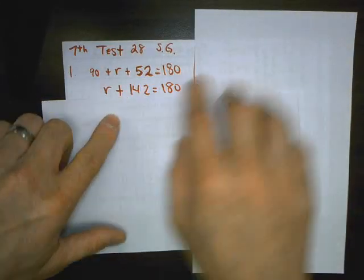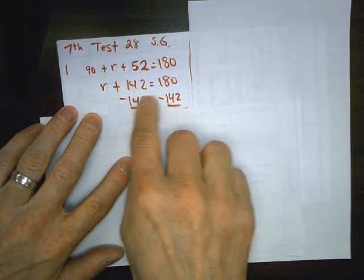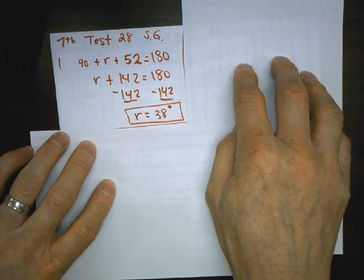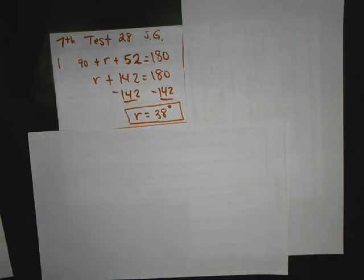So we just solve this equation, we combine like terms, and then do the inverse operation, subtract 142 to both sides, and we get 38. That's the missing angle, 38 degrees.